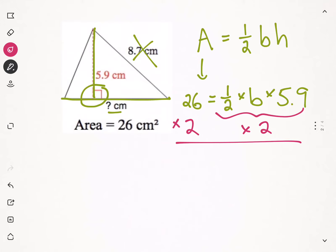26 times 2, that gives us 52, equals, one half times 2 is just 1, so that's base times 5.9. And then our last step was we are going to divide both sides by 5.9. So, 52 divided by 5.9 gives us that our base is approximately 8.81 centimeters.